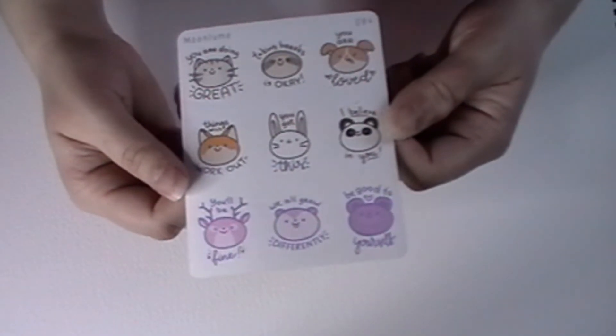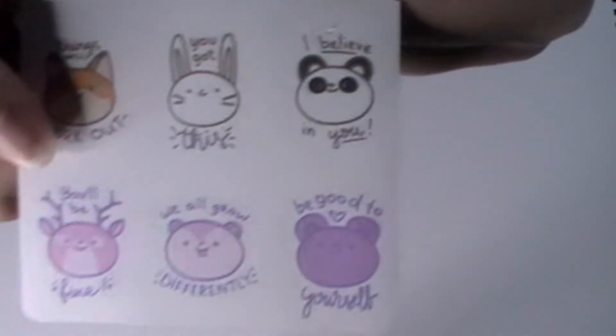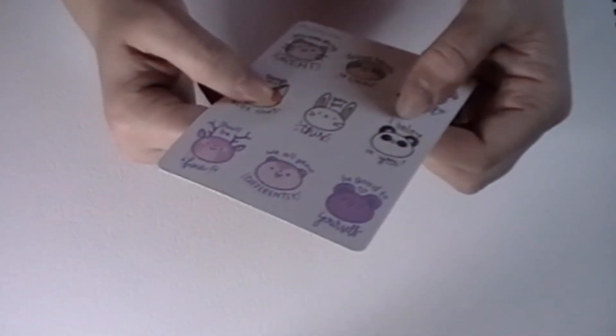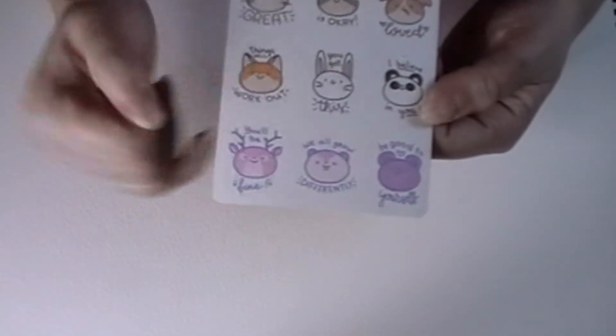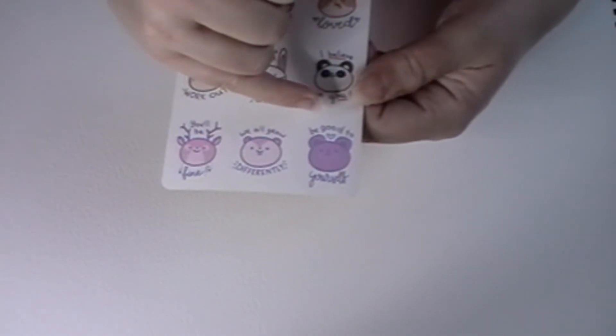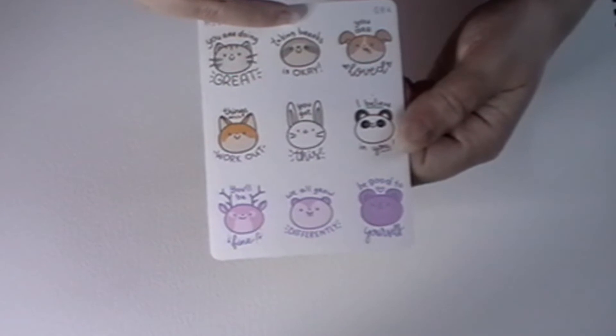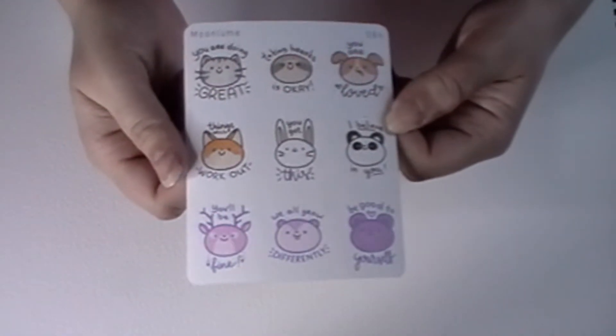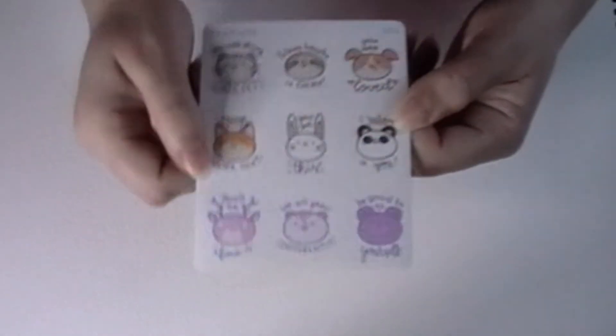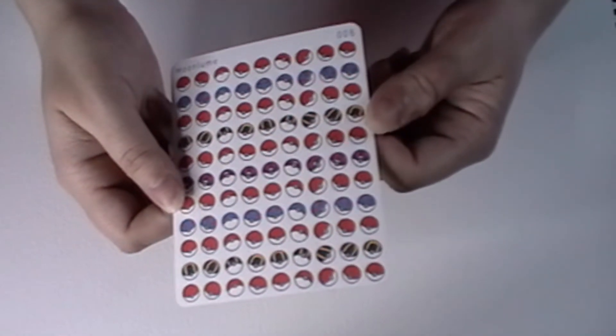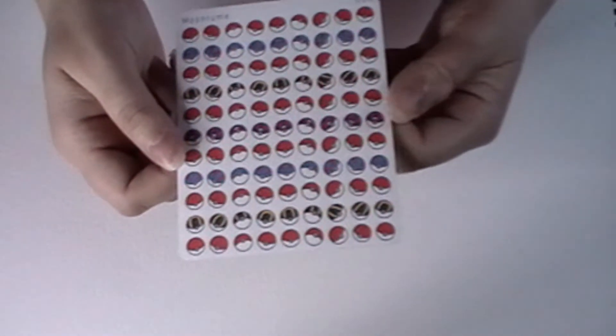Come on, sorry. Okay, so then we have these cute little stickers here. And again, these are perfectly centered but I don't know, you can see there's a slight tear there but it's not on the sticker, it's on the spare paper. So it doesn't really affect the use of them. It says, you'll be fine, we all grow differently, be good to yourself, I believe in you, you got this, things will work out, you're doing great, taking breaks is okay, you are loved. I absolutely love these. These are such positive stickers, I'm really happy with these. Beautiful.